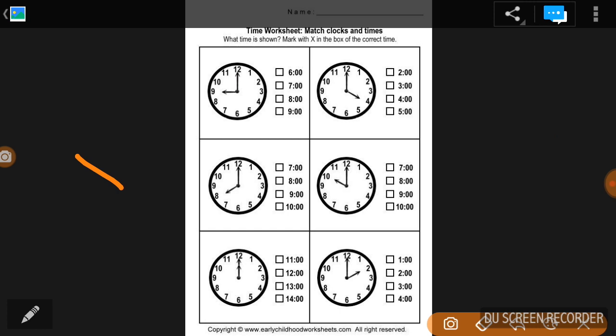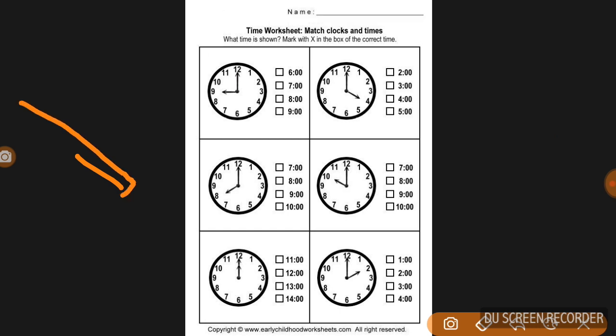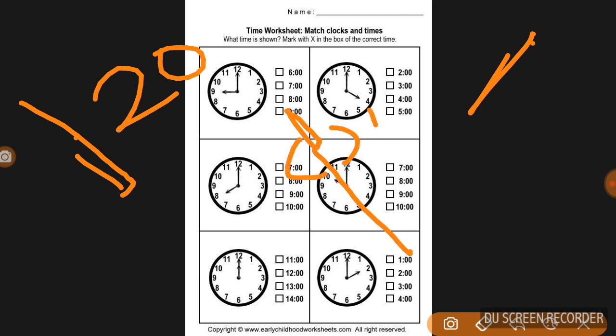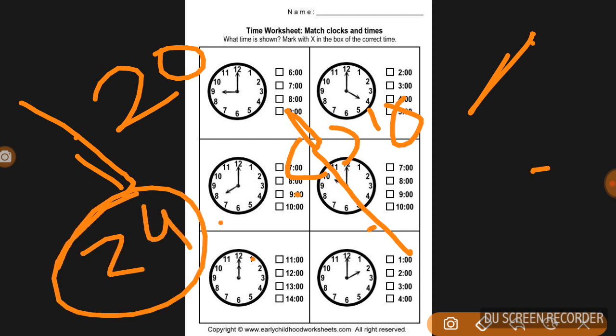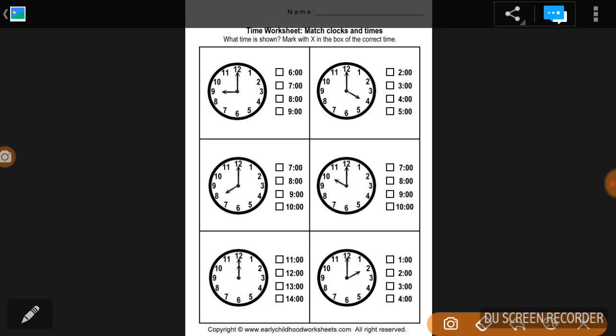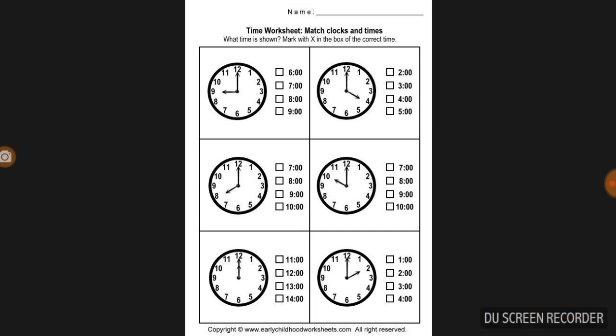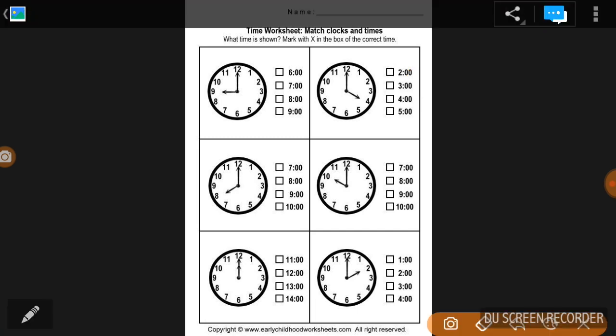The hands can coincide - meaning they overlap. Or they can be in opposition, which is at 180-degree angle. When the hands are in opposition, they are directly opposite each other on the clock face.